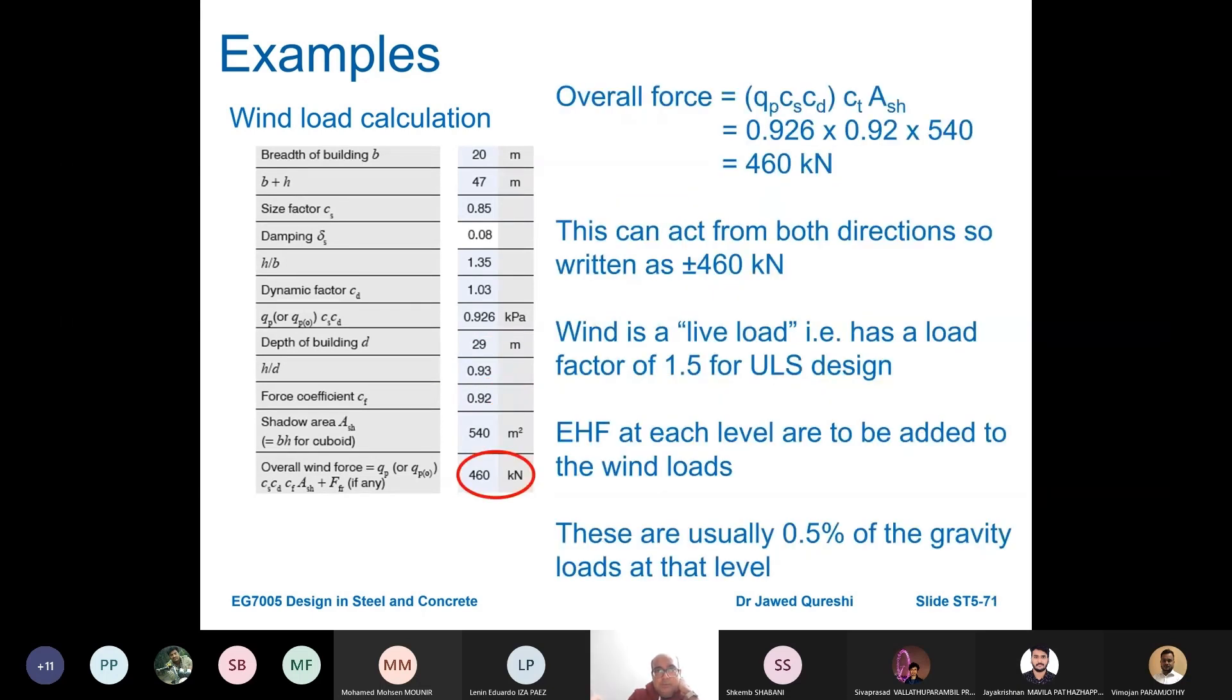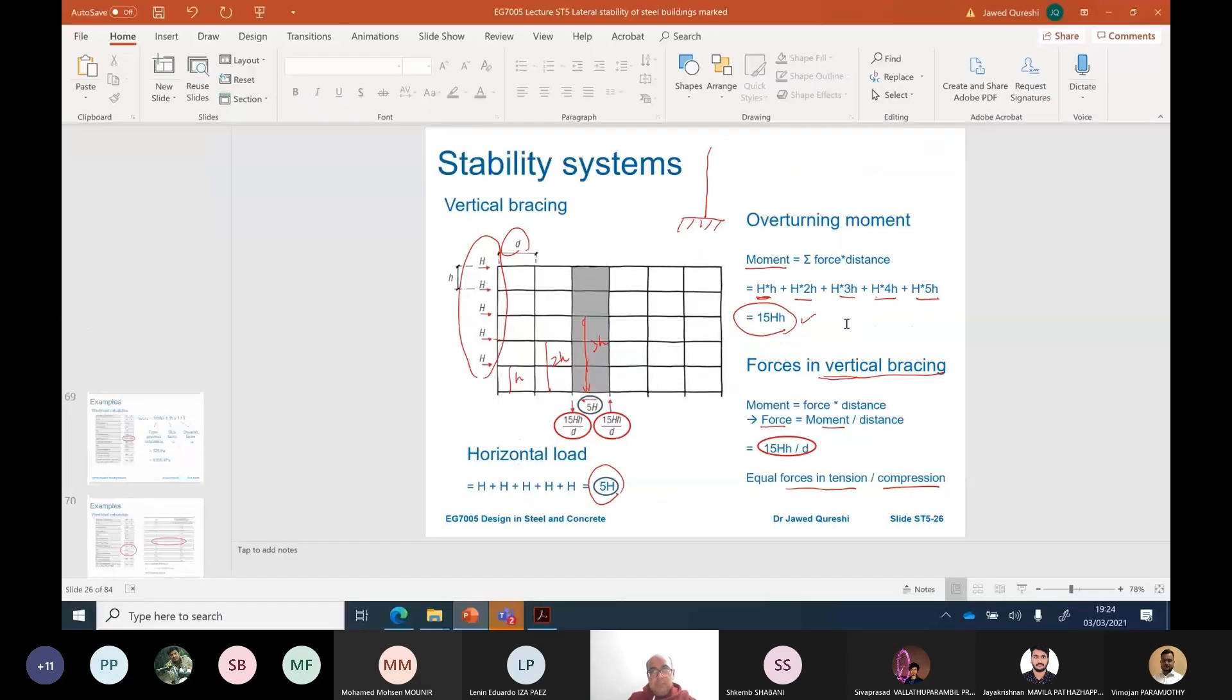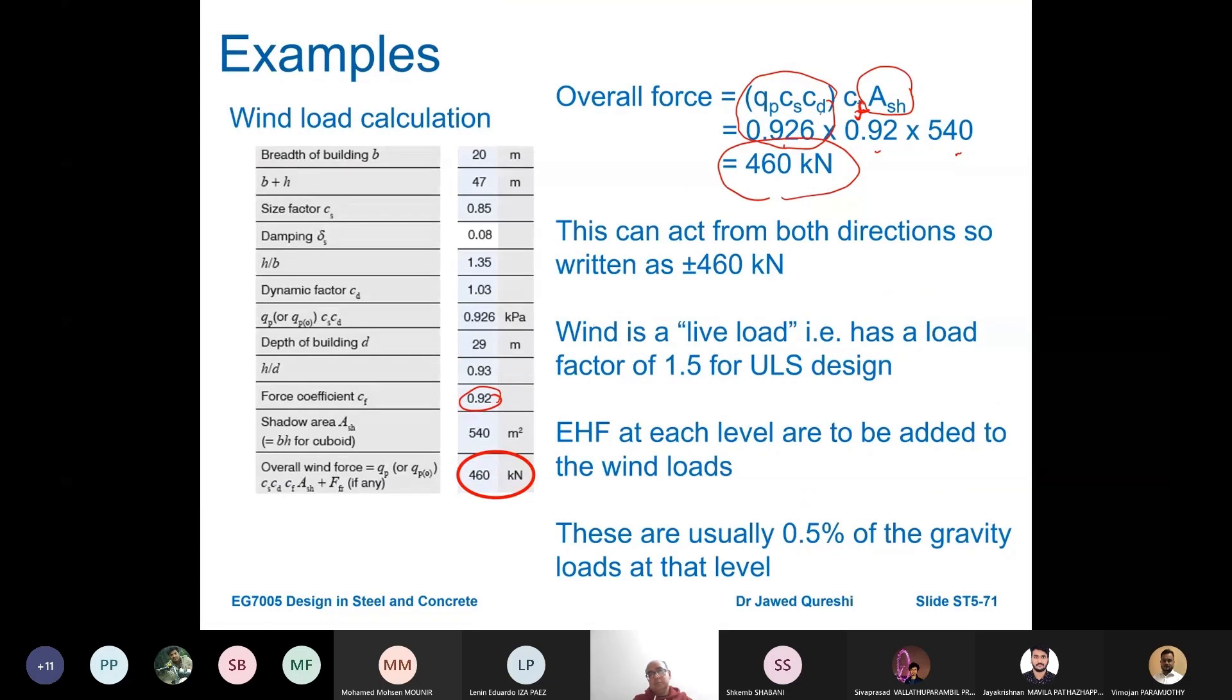Once we have it, our overall force will be equal to q_p times c_s times c_d, which we found out earlier as 0.926 kPa, times c_f which was 0.92, times a_h which is the area of the building. When you multiply all this you get a load of 460 kN, which is not very far off if we would have assumed peak pressure as 1 kN per meter which would result in 540. This can be from both directions so it can be written as ±460.